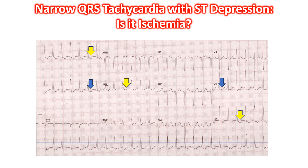Another situation in which the TA wave becomes prominent and produces ST segment change is during exercise testing. The upsloping ST segment depression seen during exercise testing has low specificity for coronary artery disease due to this.